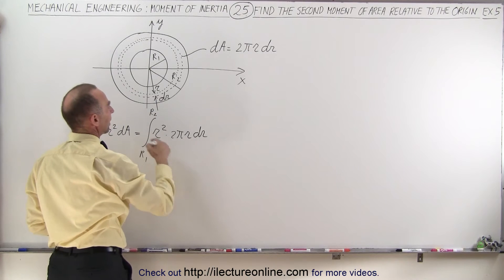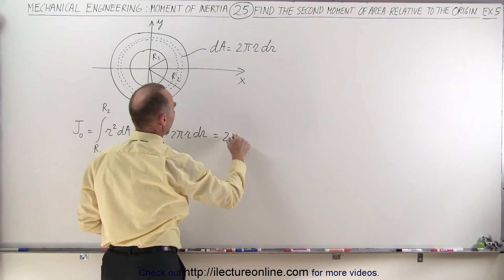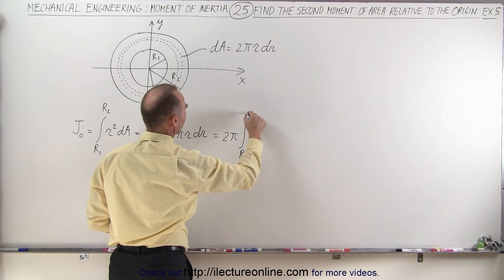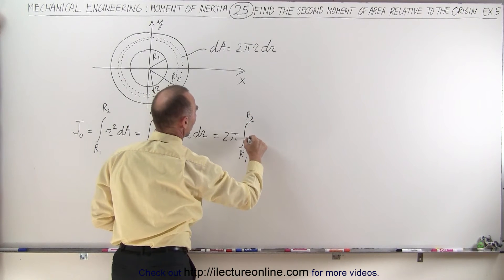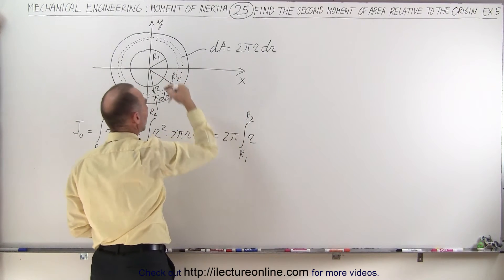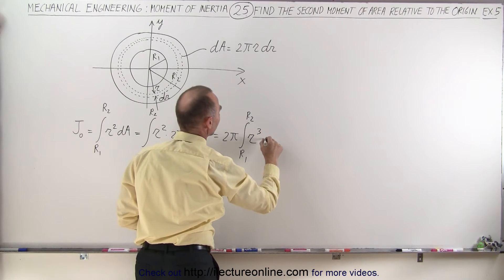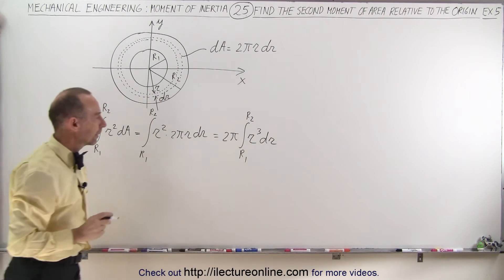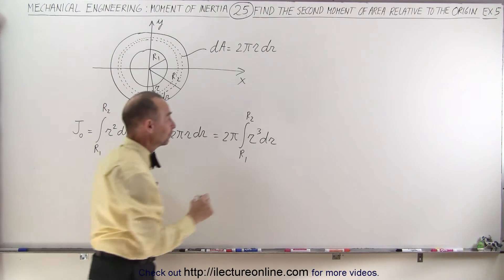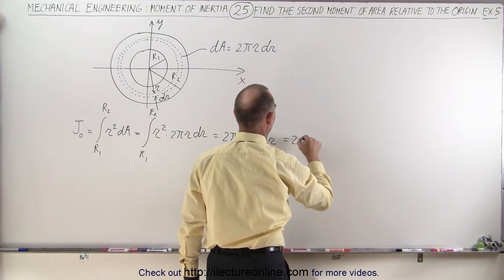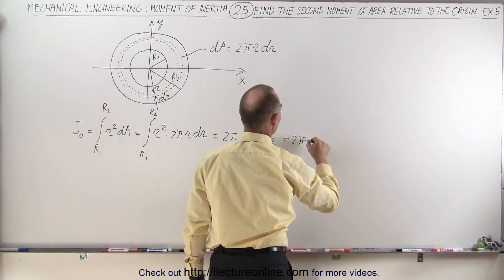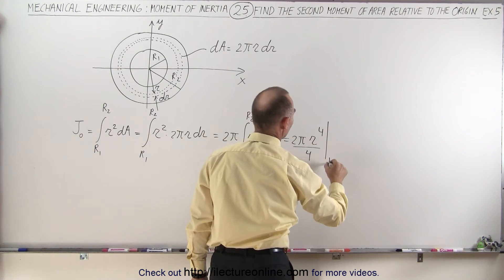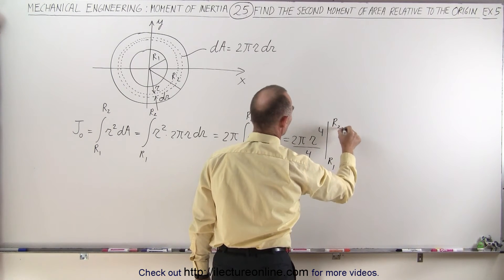We can take the 2π out of the integral, so this is 2π times the integral from r1 to r2 of r cubed dr. That I can integrate. This is equal to 2π times r to the fourth power divided by 4, evaluated from r1 to r2.